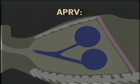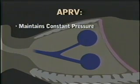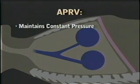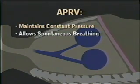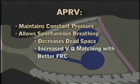APRV is a recruiting mode because it maintains a constant pressure, overcoming the closing forces superimposed on the lung, thus maintaining FRC. In addition, it allows spontaneous breathing, which will decrease dead space ventilation and improve VQ matching.